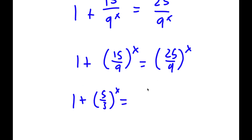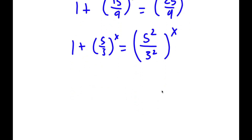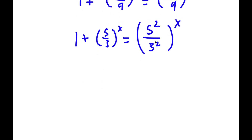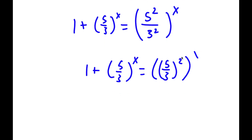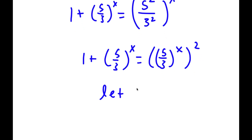And 25 over 9 — we can rewrite 25 as 5 squared and 9 as 3 squared. So now I have 5 squared over 3 squared to the power of x, which I can write as 5 over 3 to the power of 2, to the power of x. I'm going to switch the places of these two exponents, so this becomes 5 over 3 to the power of x to the power of 2. I'm going to let 5 over 3 to the power of x equal the variable y.